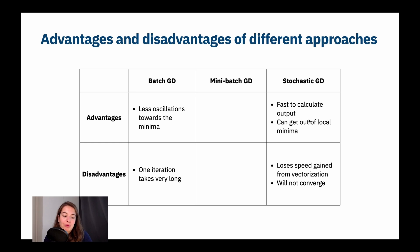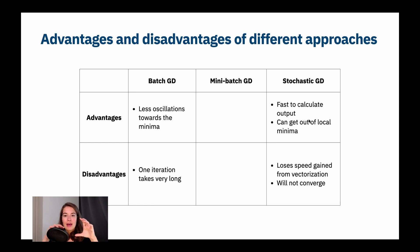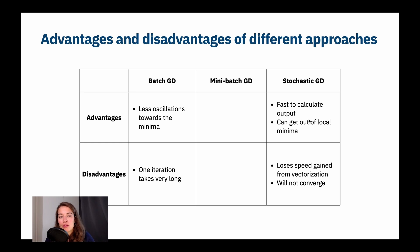Another problem with stochastic gradient descent: we use vectorization in our calculations — we give all the examples we want to process in a batch as a vector or matrix, multiply by the weight matrix, add the bias matrix, and calculate the output. When you use stochastic gradient descent and give examples one by one, you're not using the gains from vectorization.